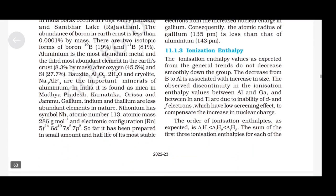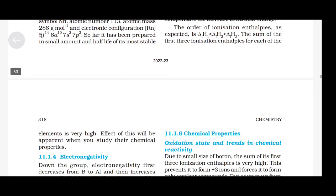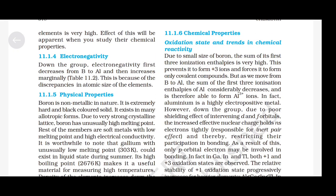Ionization Enthalpy: The ionization enthalpy values do not decrease smoothly down the group. The decrease from boron to aluminium is associated with increase in size. The observed discontinuity in ionization enthalpy values between aluminium and gallium and between indium and thallium are due to the inability of D and F electrons — which have low screening effect — to compensate for the increase in nuclear charge. The third ionization enthalpy is greater than the second, and the second is greater than the first. The sum of the first three ionization enthalpies for each element is very high.